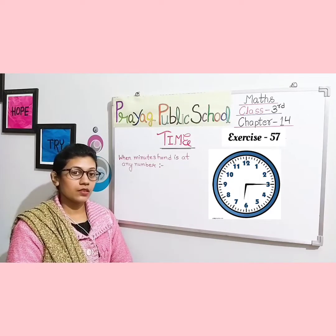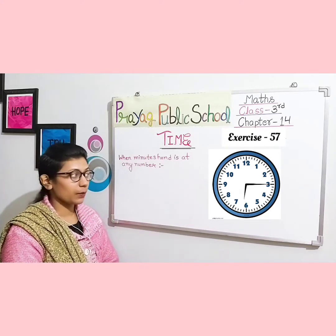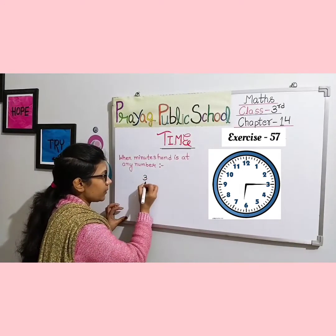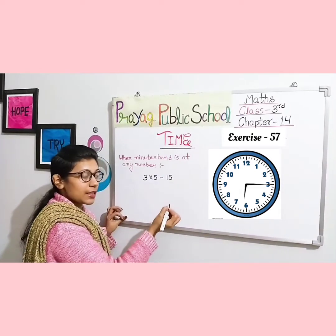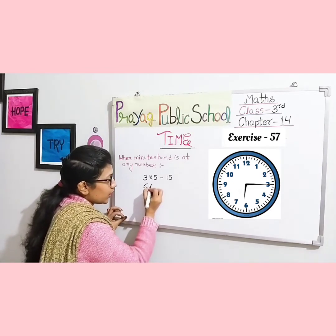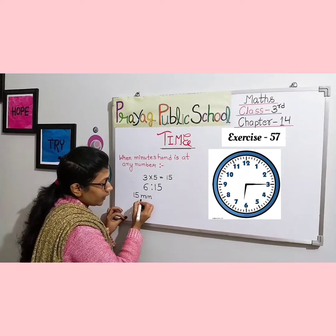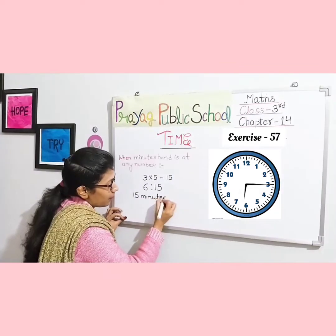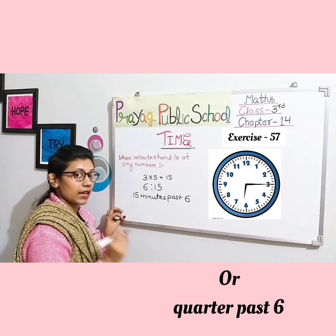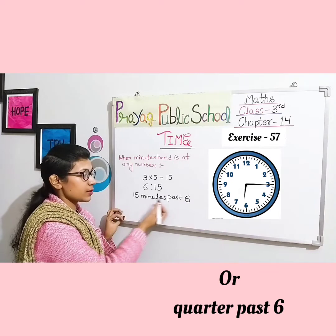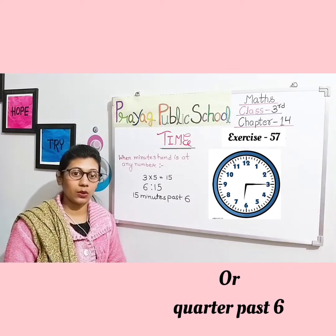Students, look at this clock. The hour hand is at 6 and the minute hand is at 3. What is the time? The minute hand is at 3, so 3 multiplied by 5 equals 15 minutes. The hour hand is at 6, so the time is 6:15. We write it as 15 minutes past 6, because 15 minutes of 6 o'clock have passed.